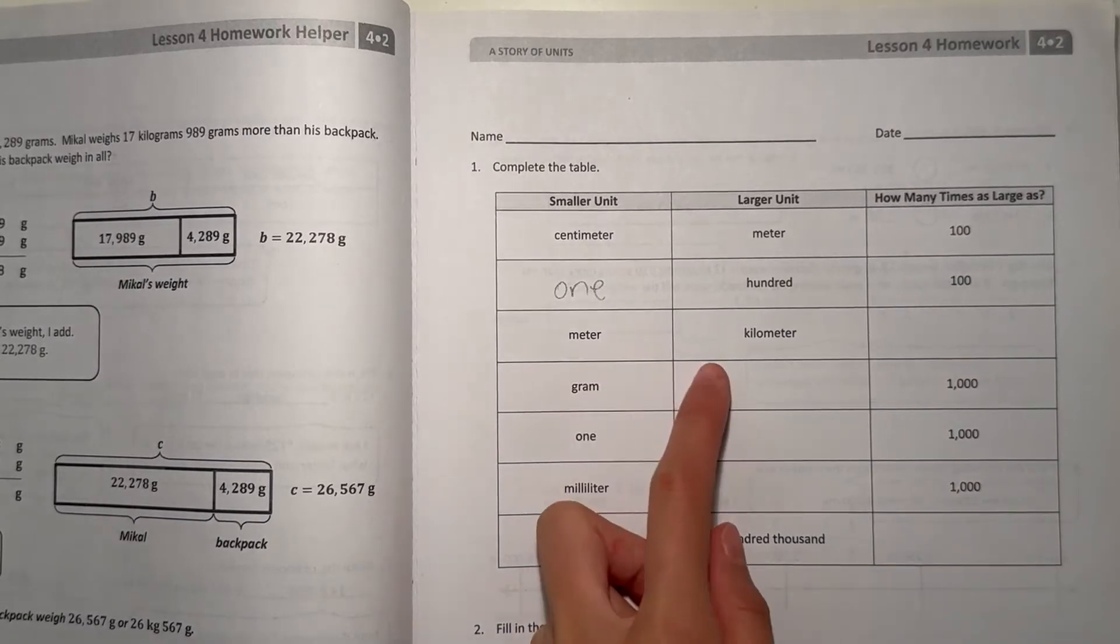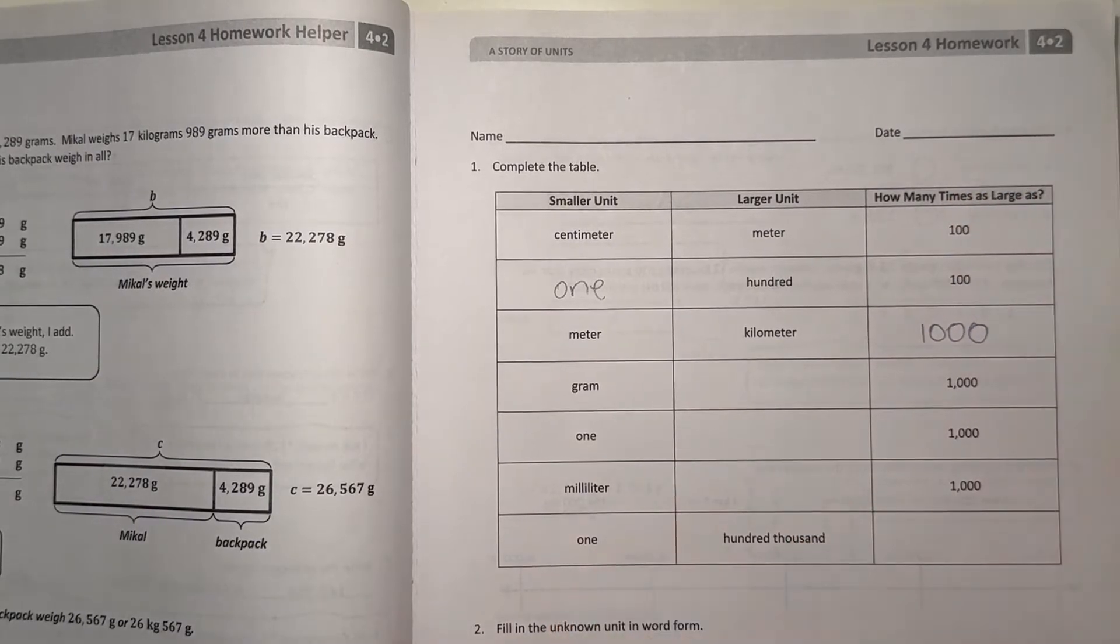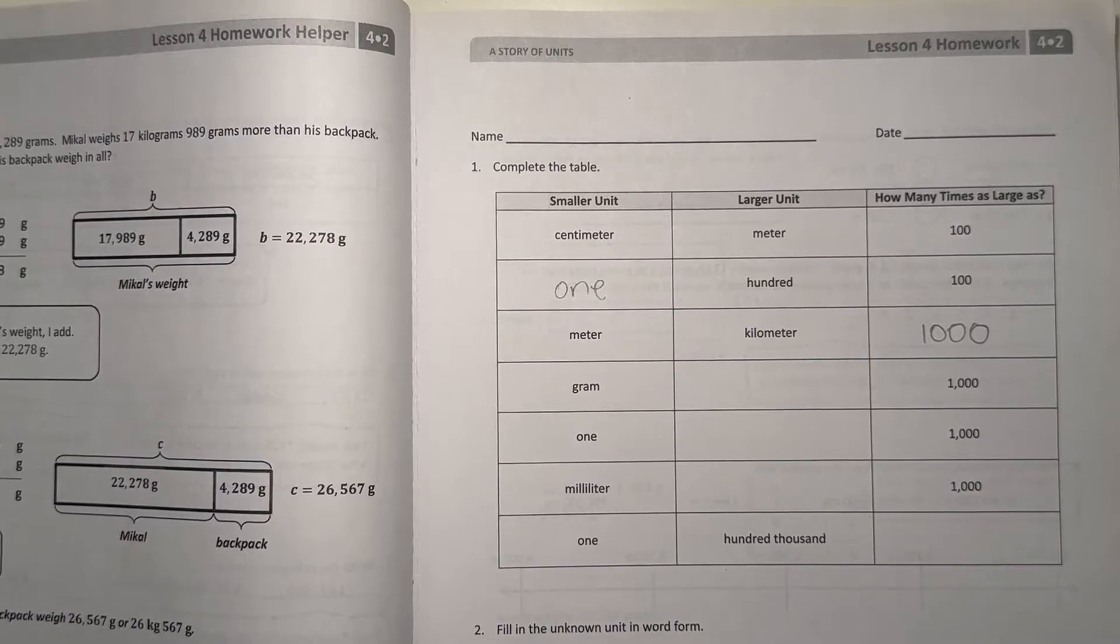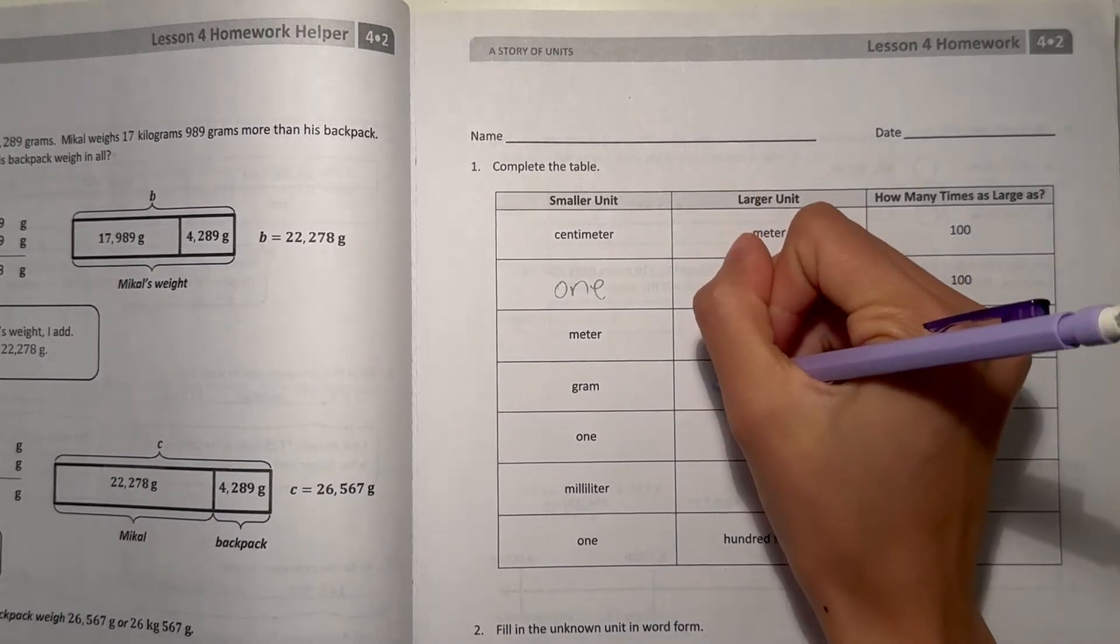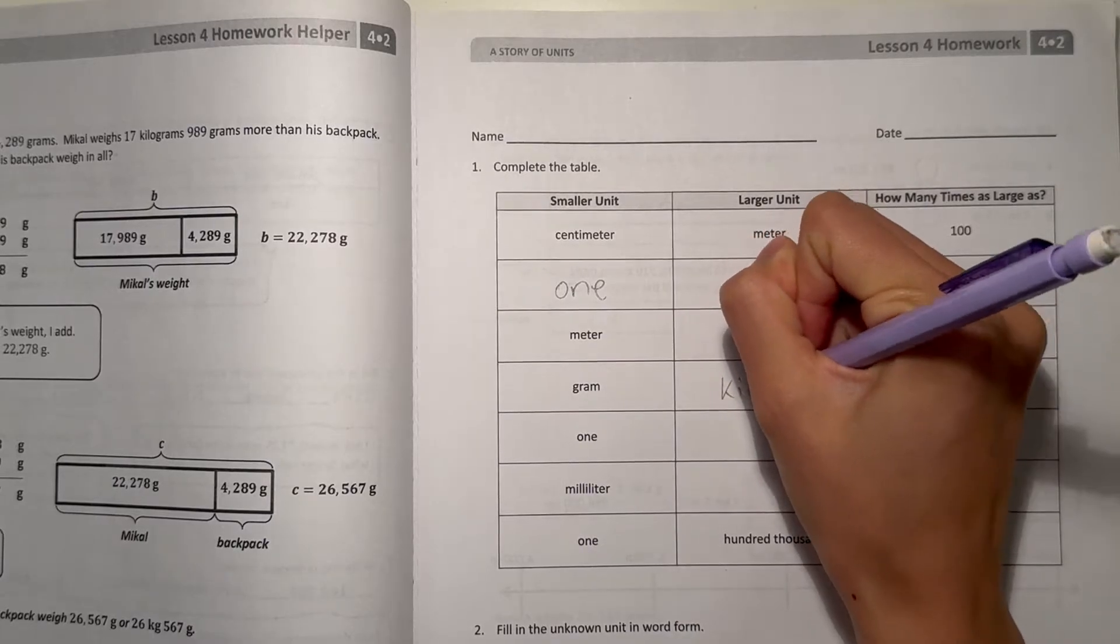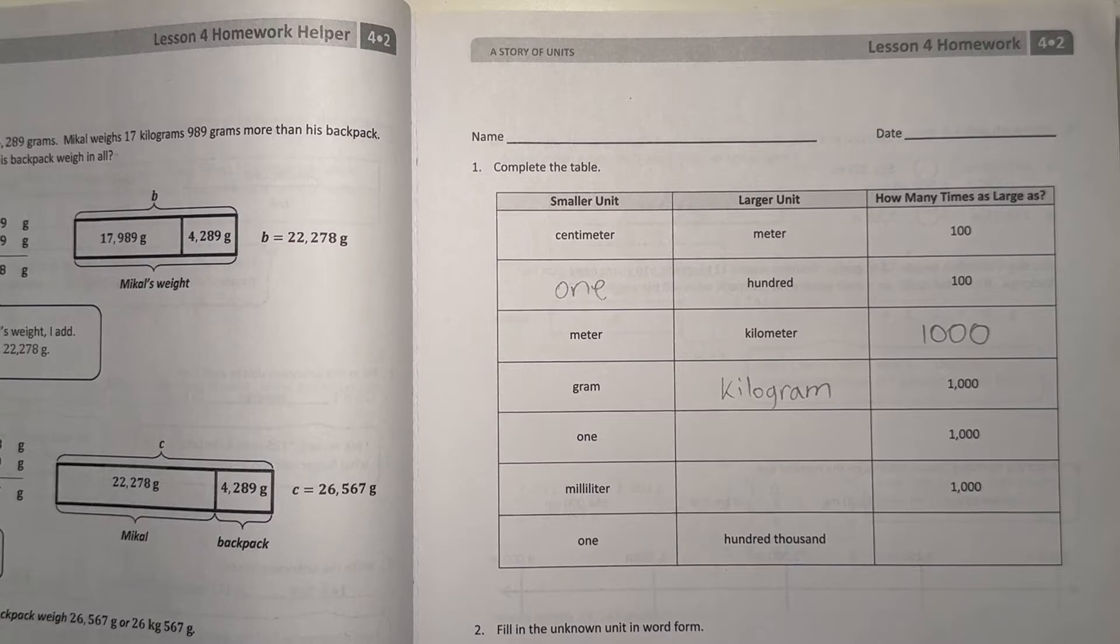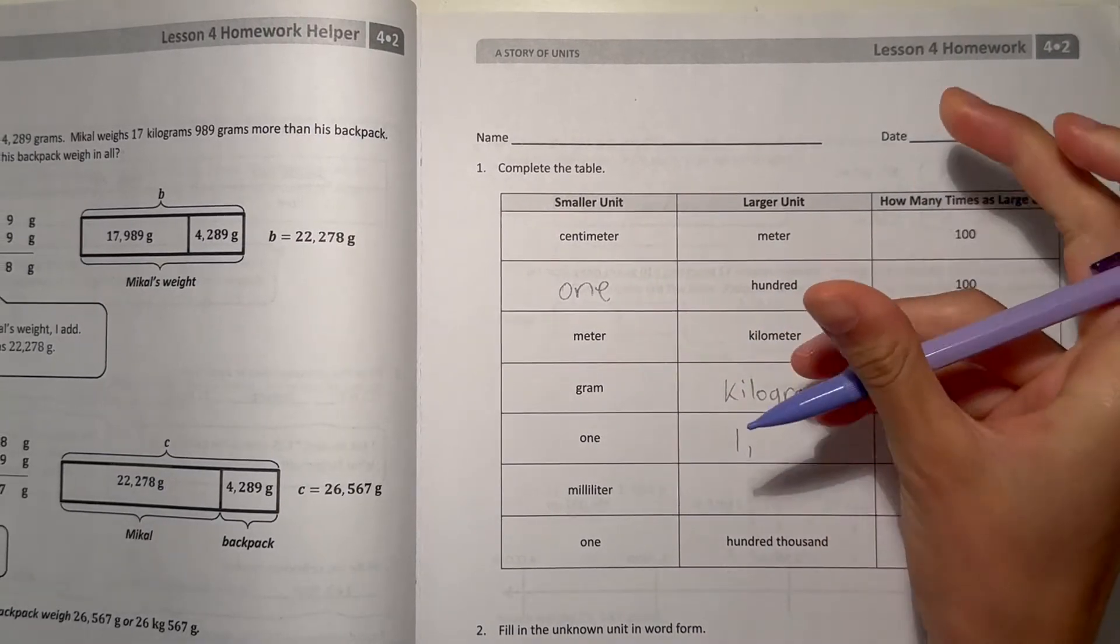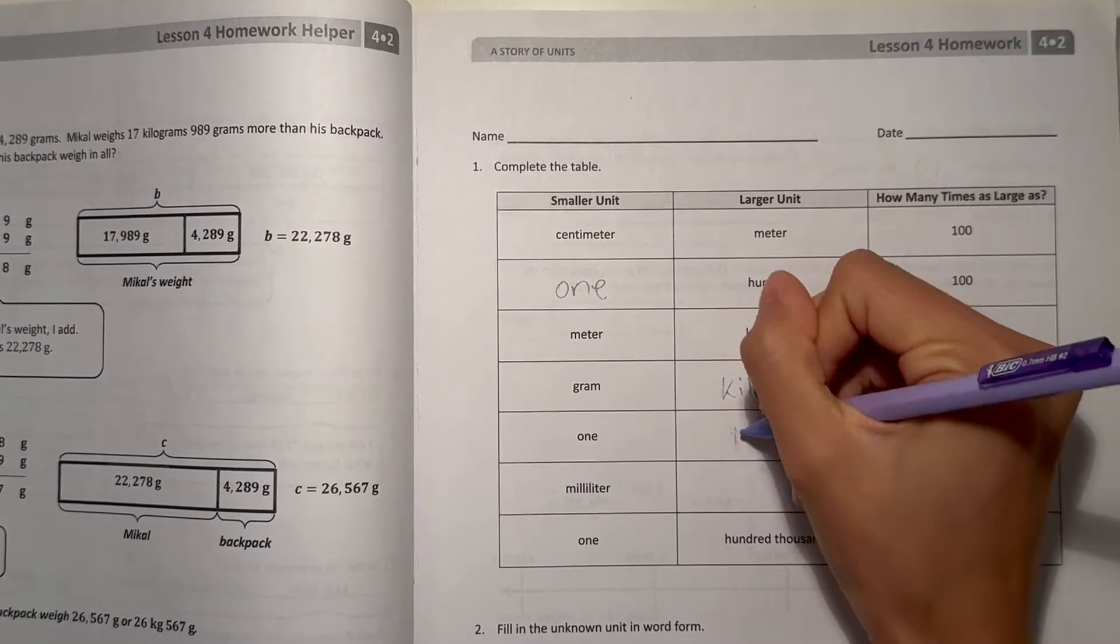Now meter and kilometer, there's 1,000 meters in 1 kilometer. Grams, so there's 1,000 grams in 1 kilogram. And now for ones, so we have 1,000 which means this would just be 1 times 1,000 which would be 1,000.